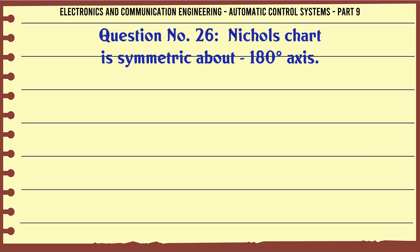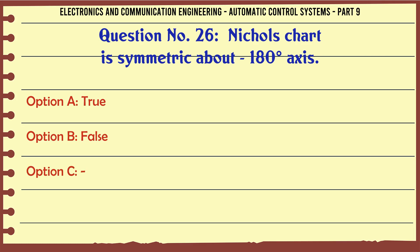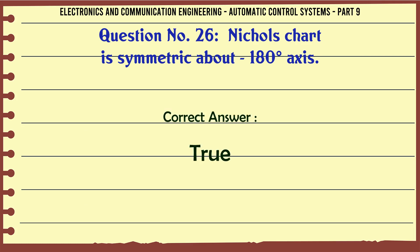Nichols chart is symmetric about the -180° axis. A. True, B. False. The correct answer is: True.